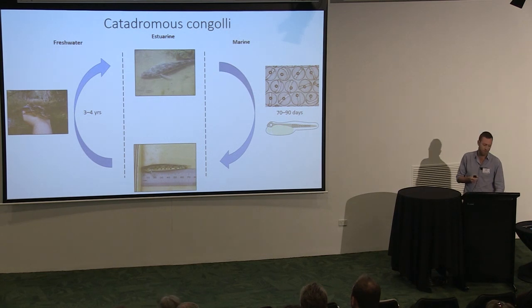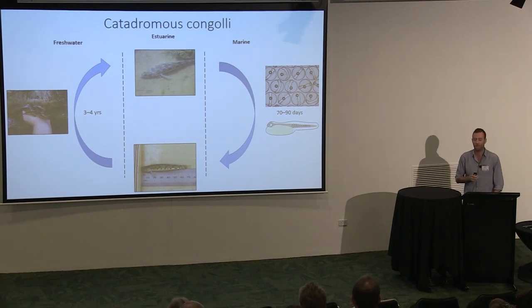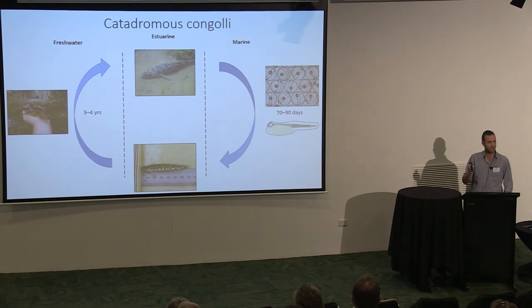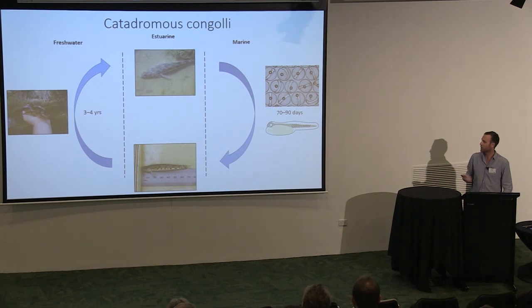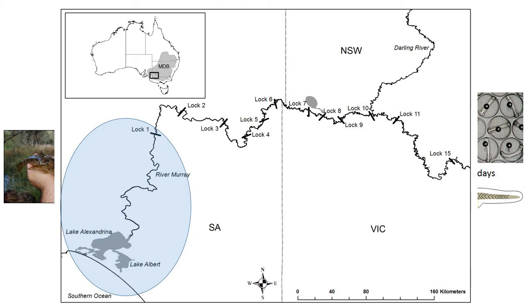Congoli are a medium-bodied catadromous fish — adult females grow to around 350 mm in length. They've got a really interesting life history: females tend to live in freshwater habitats, while males, which are a bit smaller, tend to be more common in the estuary. Females at about four years of age migrate downstream through the estuary and into the ocean for spawning. Juveniles at around 90 days of age move into the estuary and migrate upstream into freshwater habitats. Despite moving into freshwater, they don't move too far upstream — we rarely get these fish above Lock 1, and the population is focused on the bottom 200 kilometres of the basin.